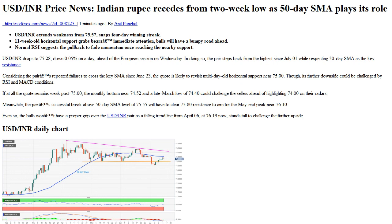USDINR drops to 75.28, down 0.05% on the day, ahead of the European session on Wednesday. In doing so, the pair steps back from the highest since July 1 while respecting 50-day SMA as the key resistance, considering the pair's repeated failures to cross the key SMA since June 23. The quote is likely to revisit multi-day-old horizontal support near 75.00.